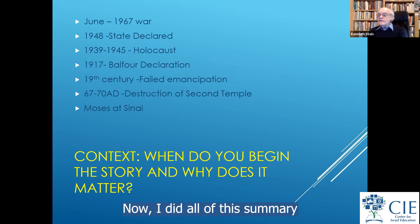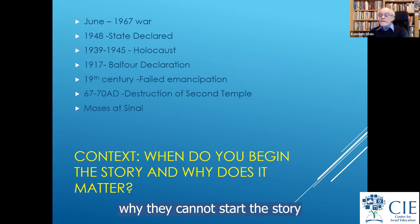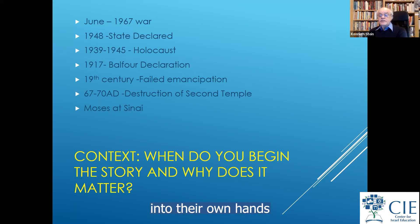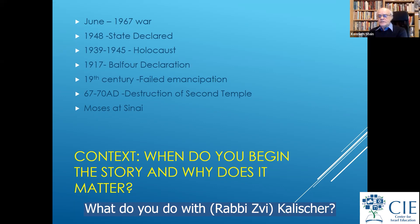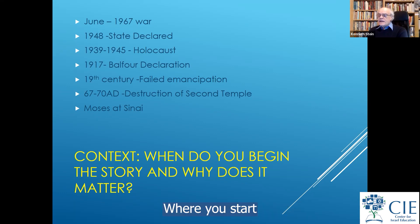I did all of this summary in 10 minutes. I don't find any reason why any teacher — whether they have 45 minutes or five sessions or fifteen sessions of 45 minutes — cannot start the story where it truly begins. Because if you start only with the Shoah, you're negating all the activity of Jews who took destiny into their own hands in the 18th and 19th centuries. If you start with the Shoah, what do you do with Al-Khali, Kalischer, Hess, Nachum Sirkin, Herzl, and Nordau? Where you start forces you to leave out what you don't include.